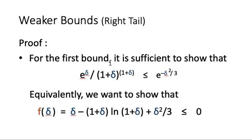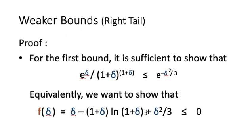For the first bound, it is sufficient to show that e to the power delta divided by (1 + delta) to the power (1 + delta) is less than or equal to e to the power minus delta squared over 3. This is equivalent to showing that the log of the left-hand side is less than or equal to the log of the right-hand side, or equivalently, that the log of the left-hand side minus the log of the right-hand side is less than or equal to 0.